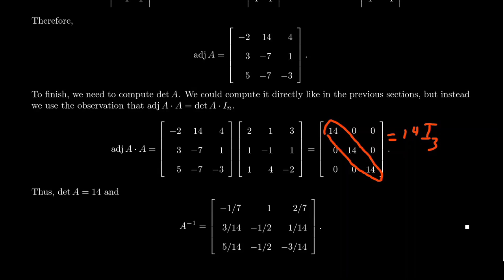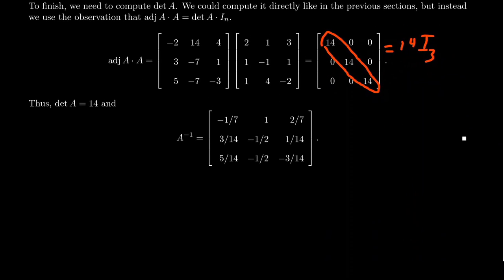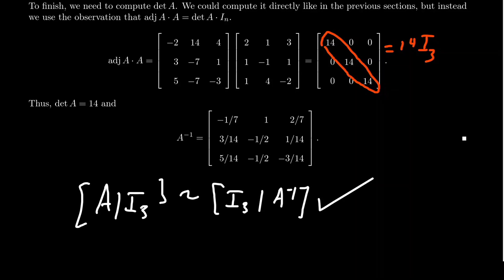And so if we divide the adjugate by 14, which 14 is the determinant of this matrix, we end up with the inverse matrix. That is a way of computing the inverse matrix. It's a little bit more drawn out than we've seen in the past, because we can take A, augment the identity, and row reduce this. You'll get the identity, augment A inverse. This method, I think, is going to be the more preferred method in general, but be aware that one can use Kramer's rule to calculate inverses of matrices.